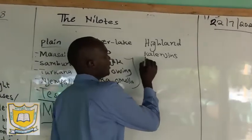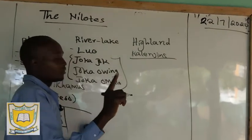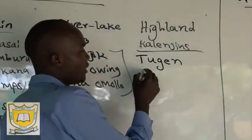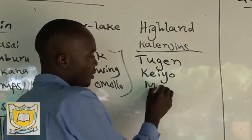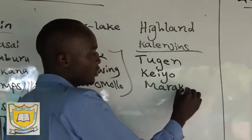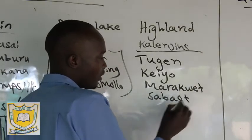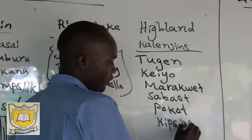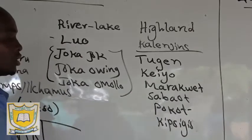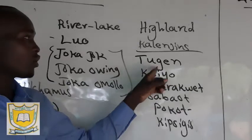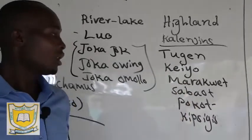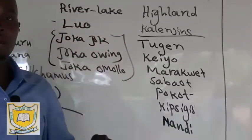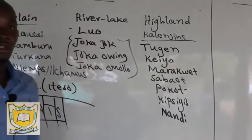The Highland Nilots of Kenya are collectively called the Kalenjin. These include the Tugen, found in Baringo County; Keiyo and Marakwet, found in Elgeyo Marakwet County; Sabaot; Pokot, found in West Pokot County; Kipsigis, found in Kericho County; and the Nandi. So those are the Highland Nilots of Kenya.